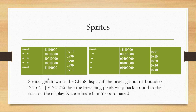The drawing procedure works as follows: sprites get drawn to the Chip 8 display, and if the pixels go out of bounds — meaning x is above or equal to 64, or y is above or equal to 32 — the breaching pixels wrap back around to the start of the display from x-coordinate 0 or y-coordinate 0. If half a sprite breaches the bounds, that half will be drawn at the start of the display while the other half remains at the end.